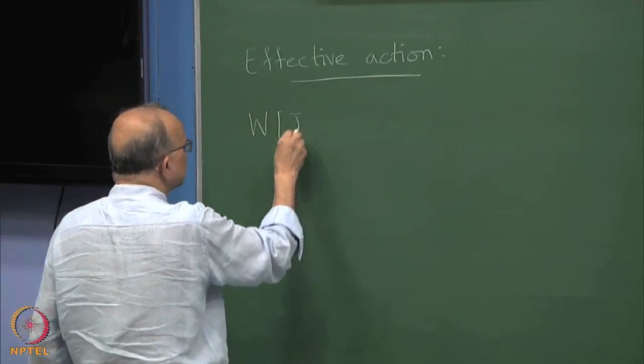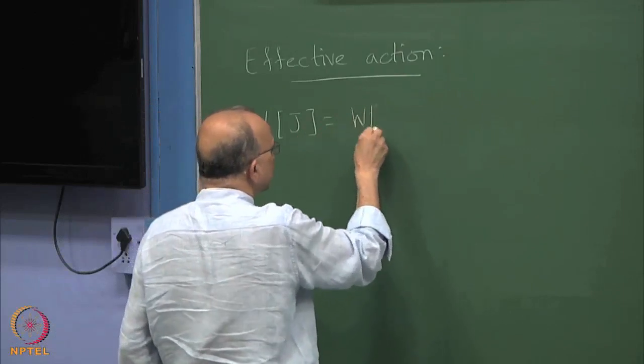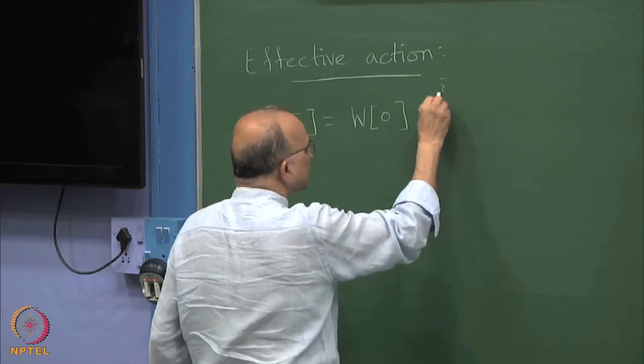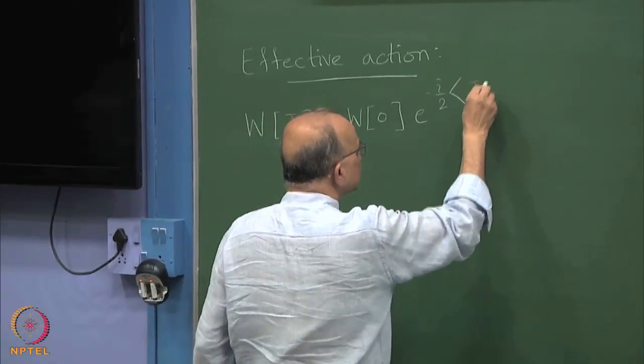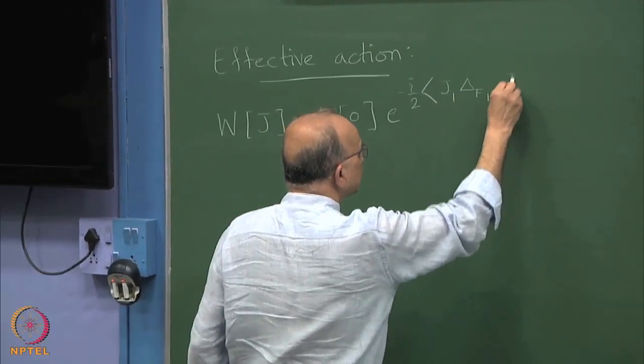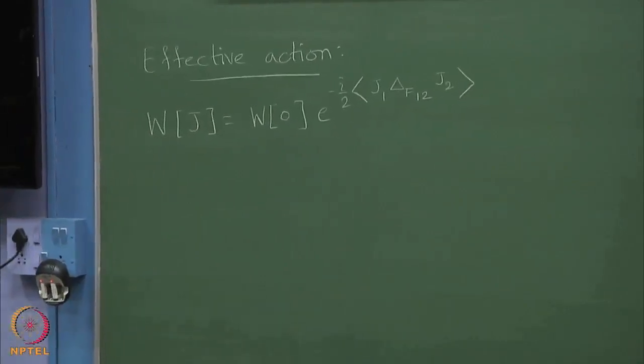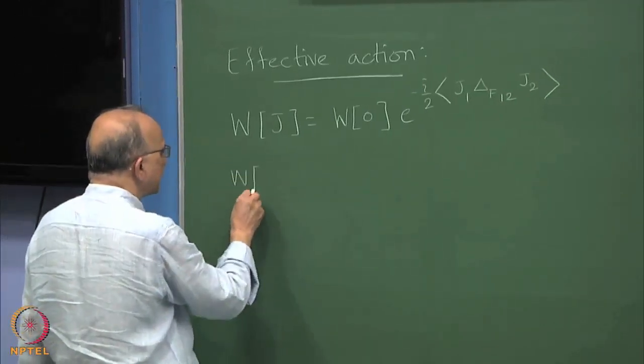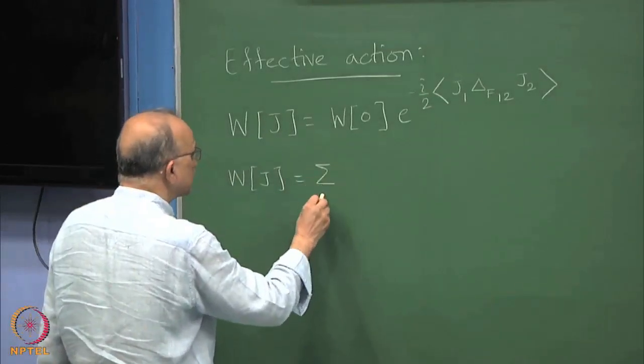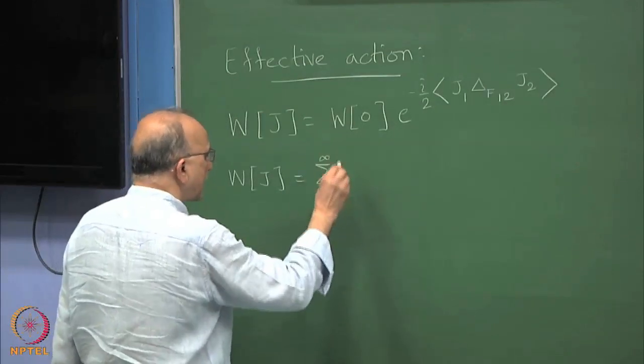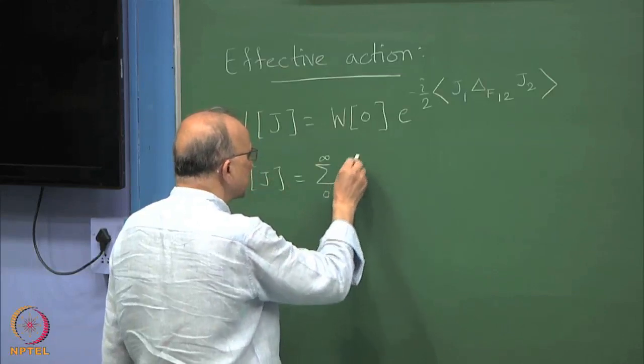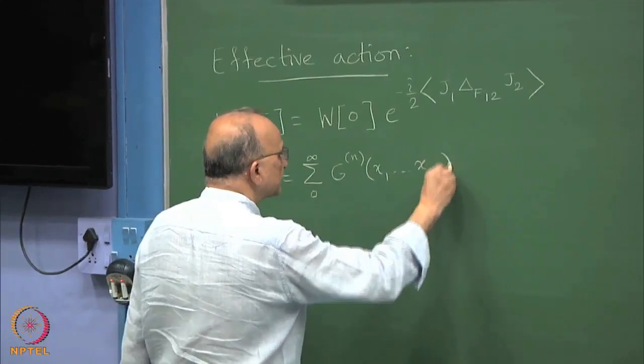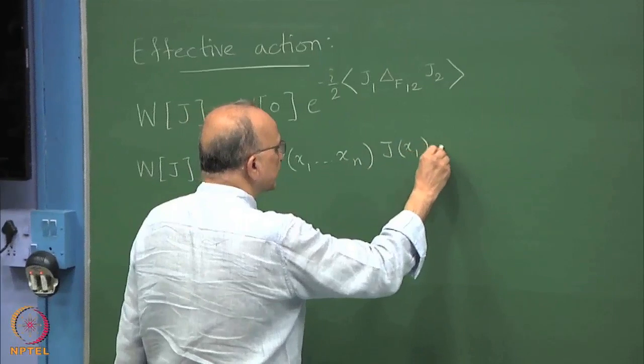What we had was W[j] equal to W[j=0] times e raised to minus i over 2 times this j_1 delta F_12 j_2, and then we argued that actually this is not what we like to look at. There were two things: one is that this W generates all the possible Green's functions. W[j] can be expanded as sum over 0 to infinity, in principle, G_n(x_1, x_2, ..., x_n) j(x_1) j(x_2)...j(x_n).